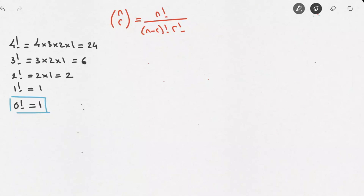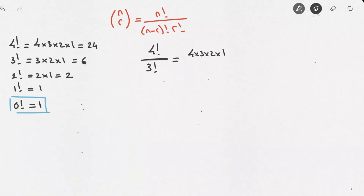Now let's see how we can simplify fractions with factorials. Let's say we were given 4! over 3!. One way would be to write 4 times 3 times 2 times 1 over 3 times 2 times 1, giving us 24 over 6, which simplifies to 4. That works, but when dealing with large factorials, say 10! over 7!, this becomes a long task where we may make a mistake.